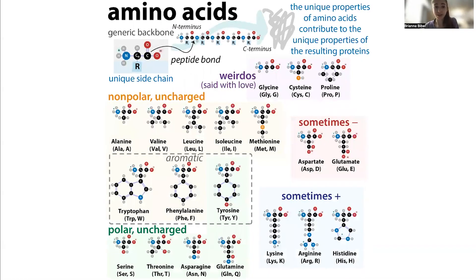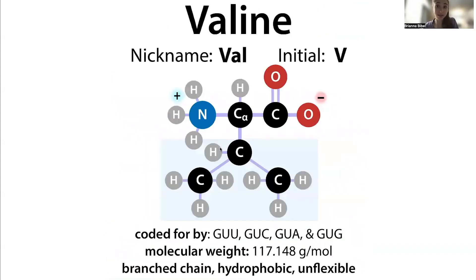Each of the amino acids, or protein letters, has a unique side chain, or R group. If you look at valine, its side chain looks like a V — or at least if it was flipped over — and this is helpful because its initial is a V. This V actually stands for valine, the name which comes from valeric acid, but it's really helpful that it's a V and it looks like a V.